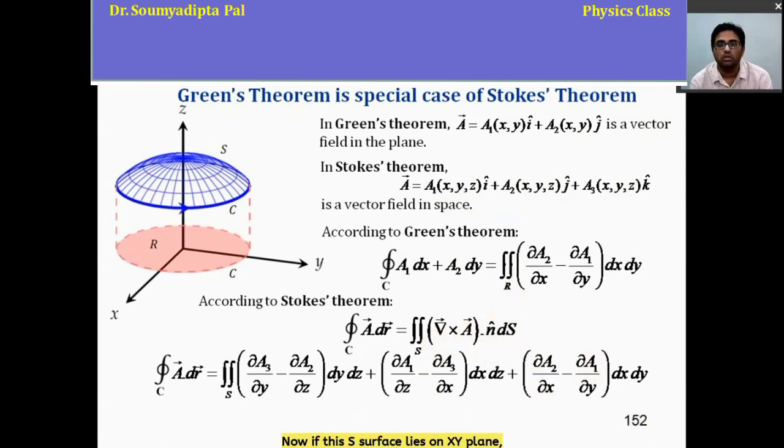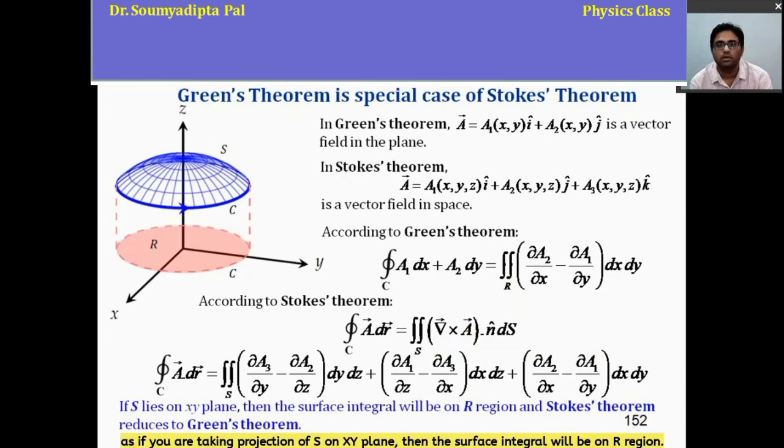Now, if this S surface lies on xy plane, as if you are taking projection of S on xy plane, then the surface integral will be on r region. Only this last term survive in that case. Other two terms will vanish, will be zero. And Stokes theorem reduces to Green's theorem. Thus, we can conclude that Green's theorem is a special case of Stokes theorem.